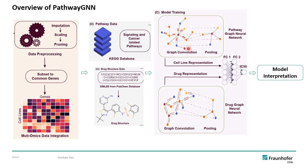Followed by this, we train the PathwayGNN model. We have two representations: one coming from cell lines, which is the graph structure of a pathway where each node represents a gene and these nodes are enriched with the multi-omics data. We also have another graph structure of the drug where each node is an atom and the edges are the connections between atoms, enriched with physicochemical properties of the drug. Both these representations merge into two fully connected neural networks, which finally merge into one single node that predicts the IC50.